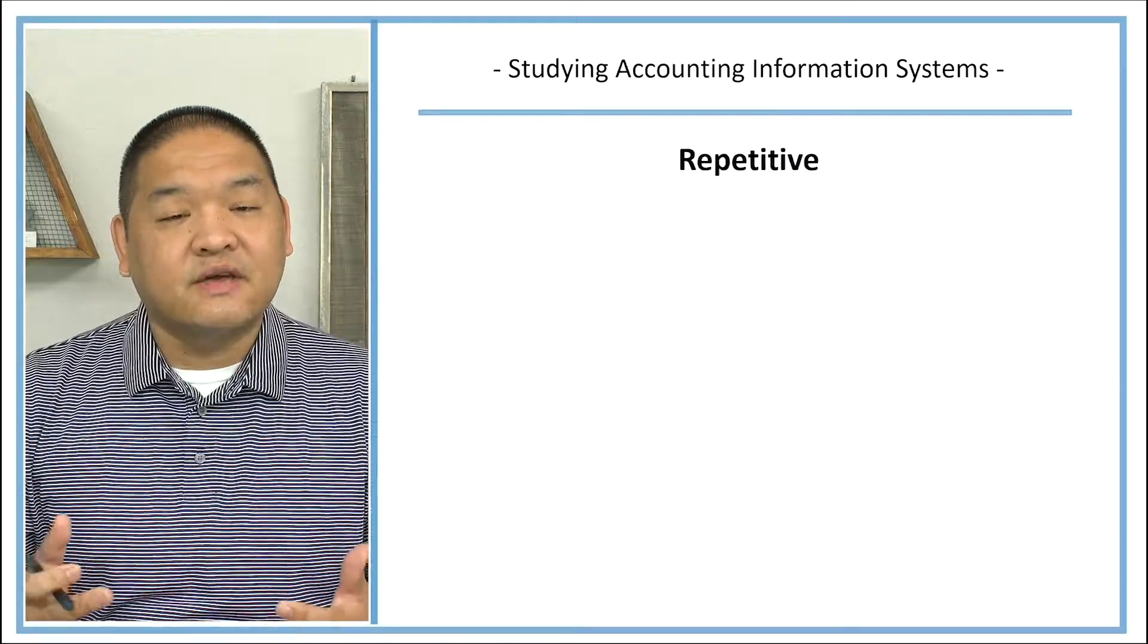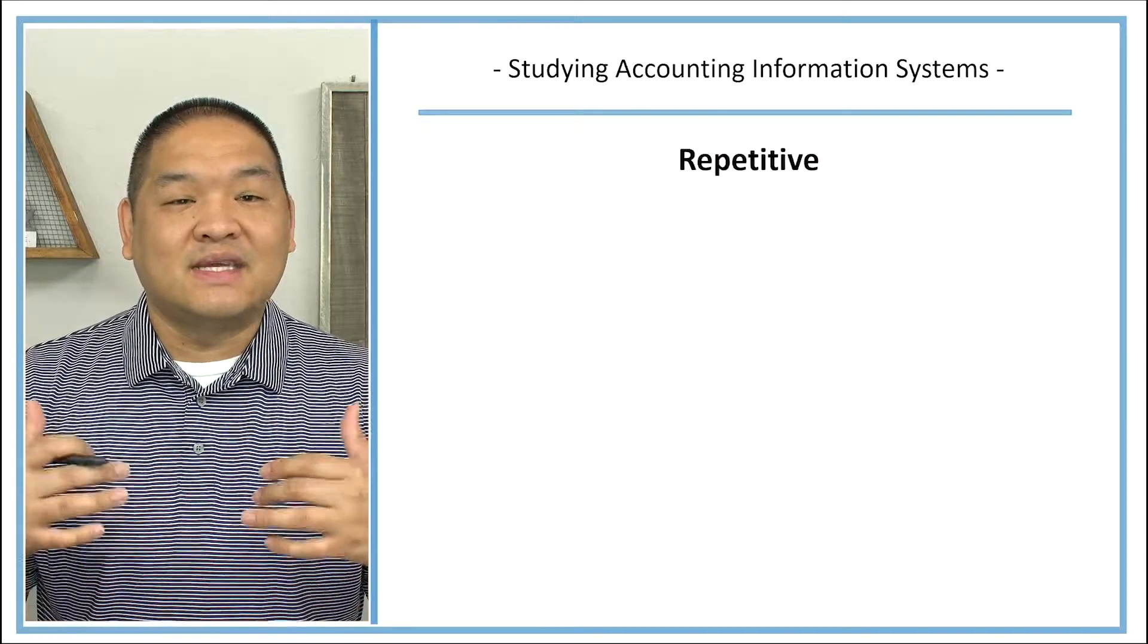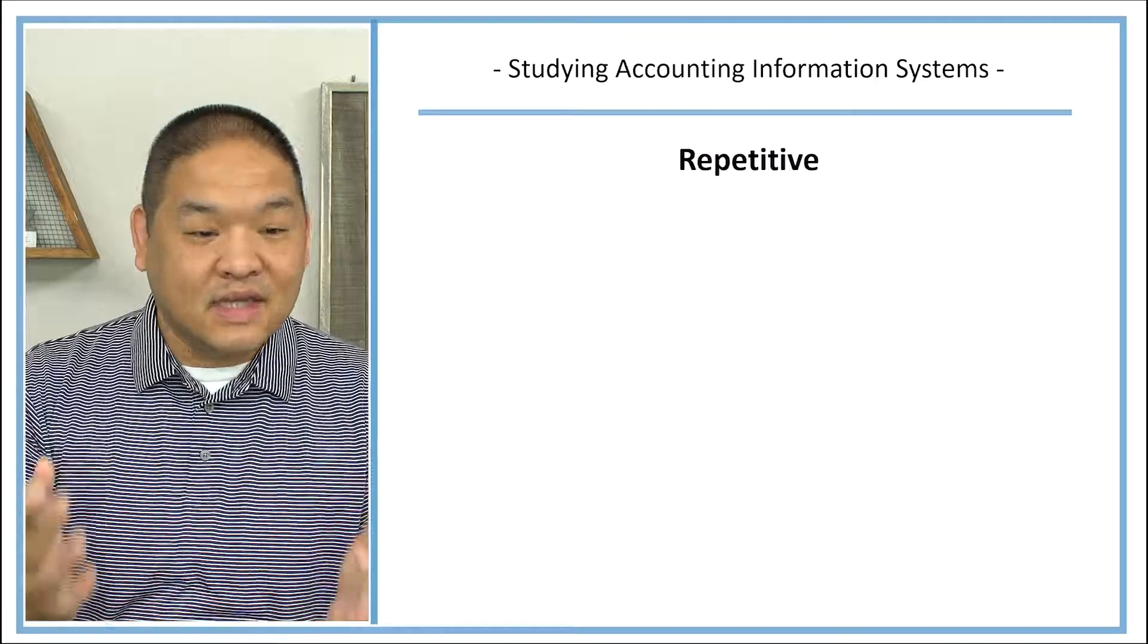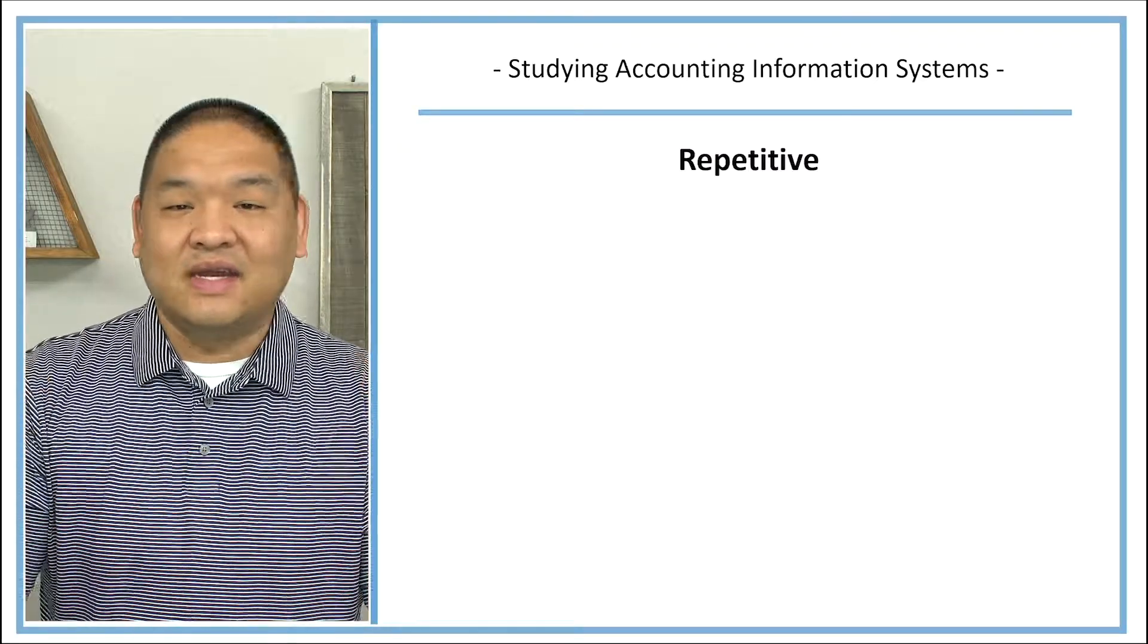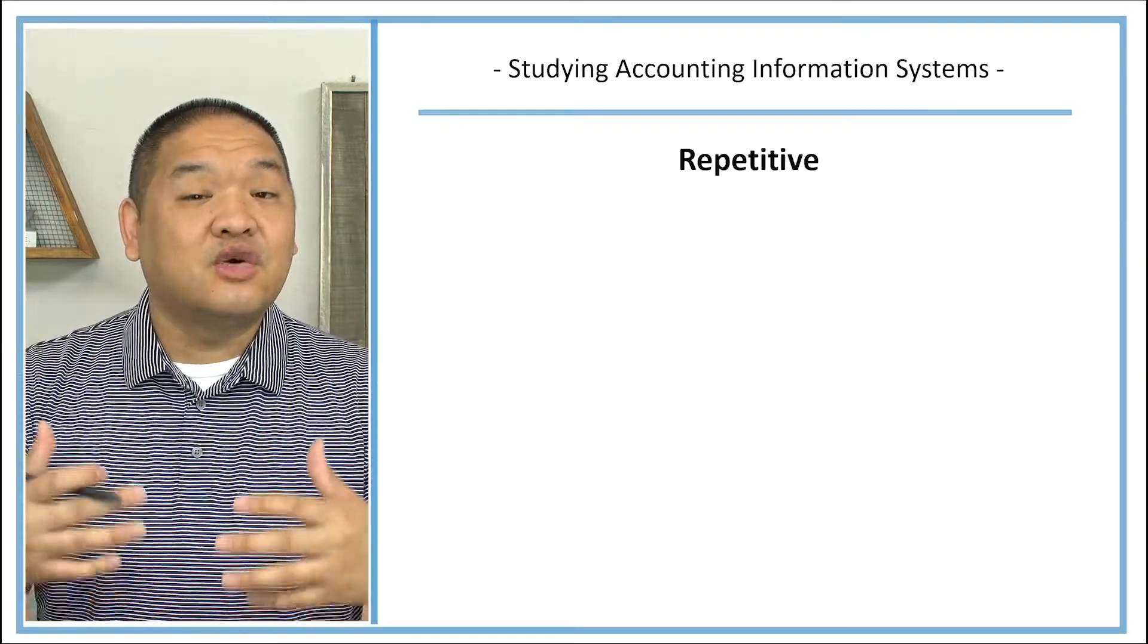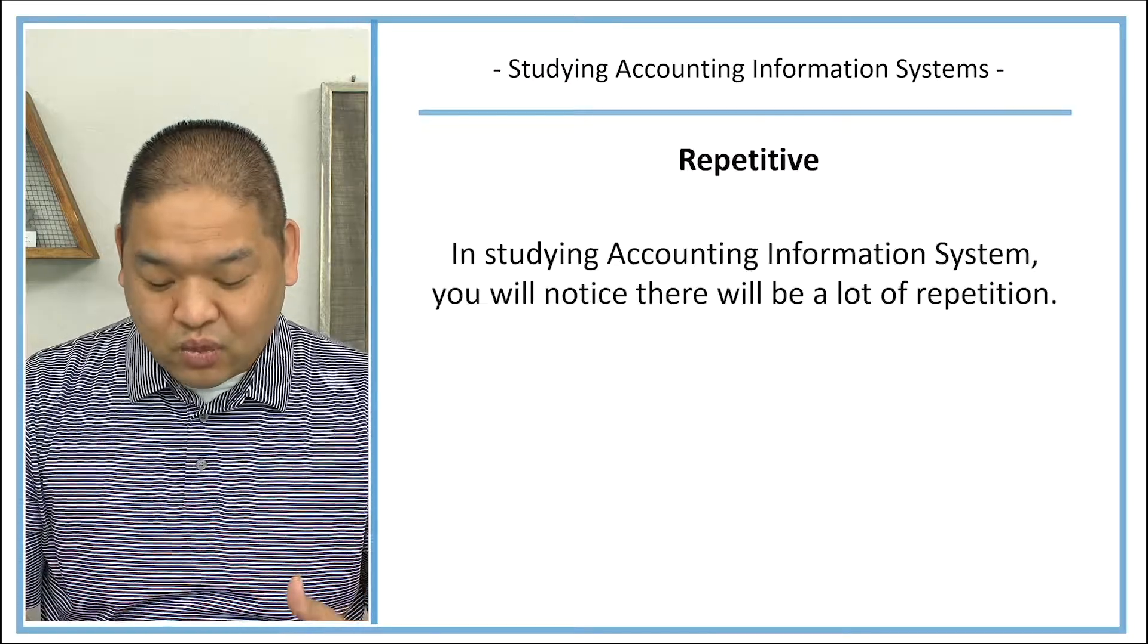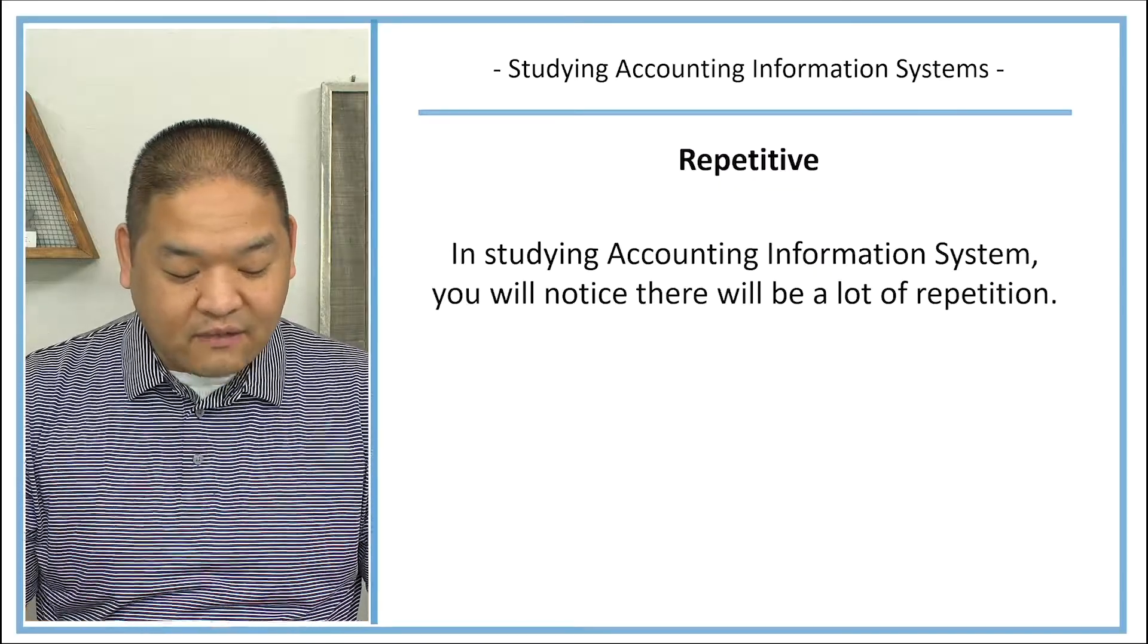Now what you're also going to find in this course is that there's going to be a lot of repetition. So I'm going to say something, let's say, in section one here, and then you're going to find that I'm going to say the same thing in sections two, three, five, seven, nine, and twelve. And you're going to go, 'Wait, I've already seen it five or six times,' but there is going to be that repetition because that's how accounting information systems work.